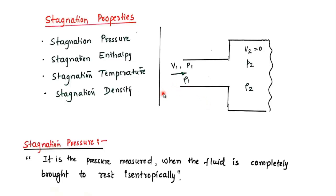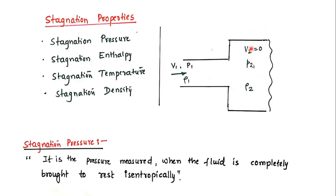In this lecture we will see a few more concepts related to compressible flow. We will look at stagnation properties: stagnation pressure, enthalpy, temperature, and density. Stagnation properties are considered under stagnation conditions — imagine a fluid flowing with certain properties at state 1 (velocity v1, pressure p1, density, and temperature), and this flow is brought to rest by expanding into a larger area.